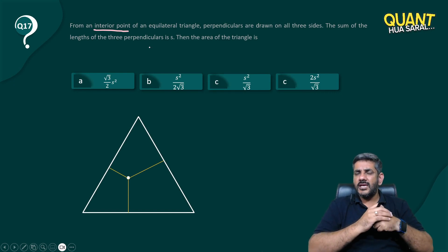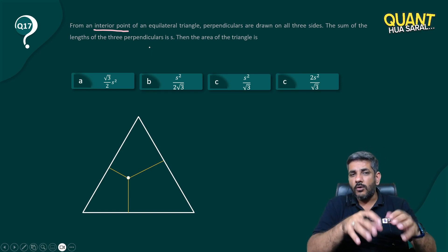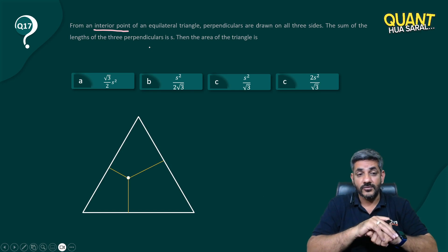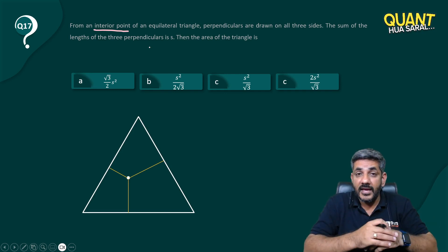The question is asking for the area of triangle. We know that area of an equilateral triangle is root 3 by 4 a square. But how do I relate that s with that root 3 by 4 a square? It's difficult for us to figure out, right? How do I find out the sum of their lengths because the point can be anywhere?